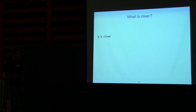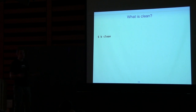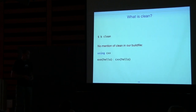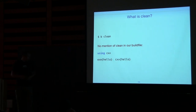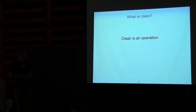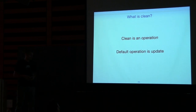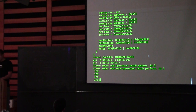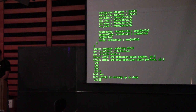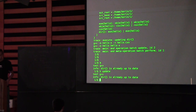Let's talk about 'clean.' We typed it and it did the right thing, but what is clean exactly? In a make file it would be a target, but we haven't mentioned clean in our build file. In build2, 'clean' is an operation. The default operation is 'update,' so when we run 'b' it's equivalent to running 'b update' — you get exactly the same message.